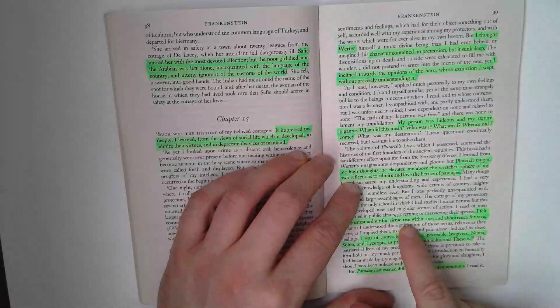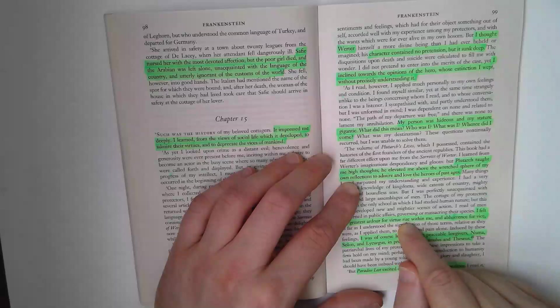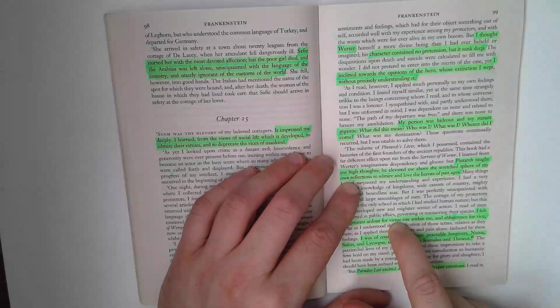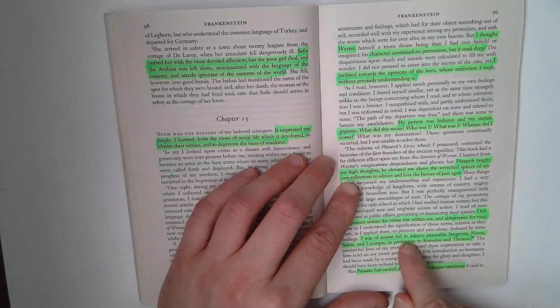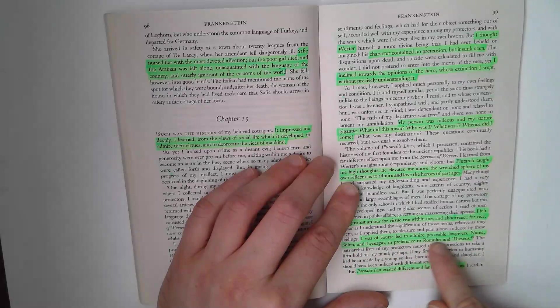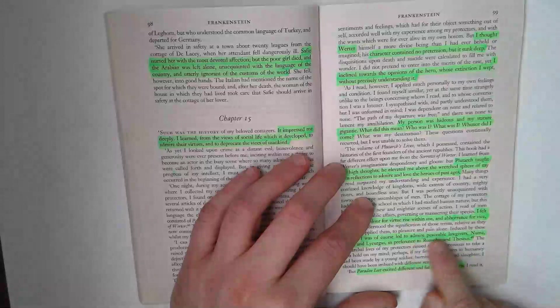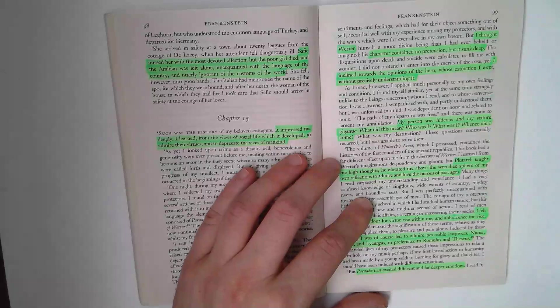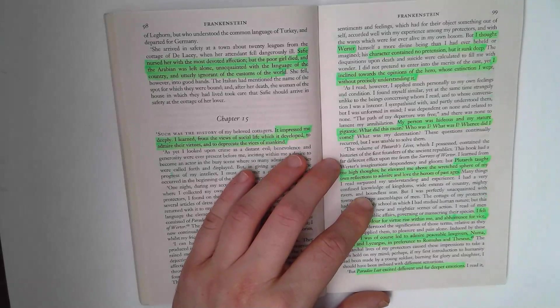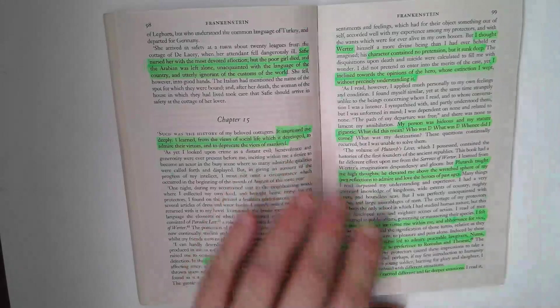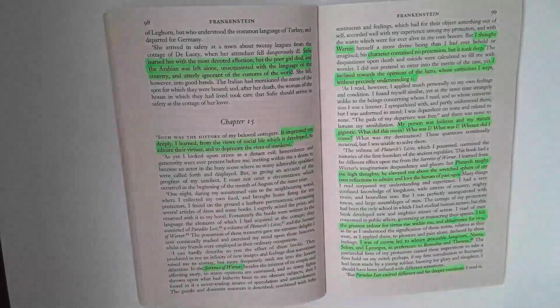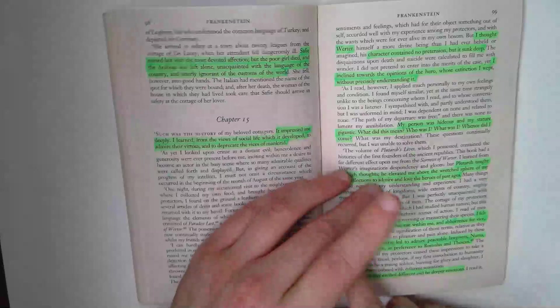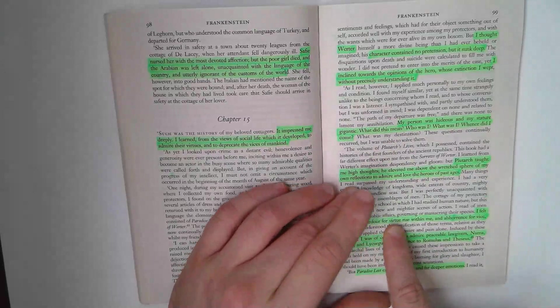He wants the greater start of virtue. He is powerful, and I think the creature realizes he's powerful, and he's got the potential to be a force for good here as well. I was, of course, led to admire peaceful lawgivers, Numa, Solon, and Lycurgus, in preference to Romulus and Theseus. He admires peaceable lawgivers, rulers who are kind-hearted but also focus on peace. And he gets this idea that potentially he is a superior being at the moment in a position of inferiority. And he has the ability to be a force for good.